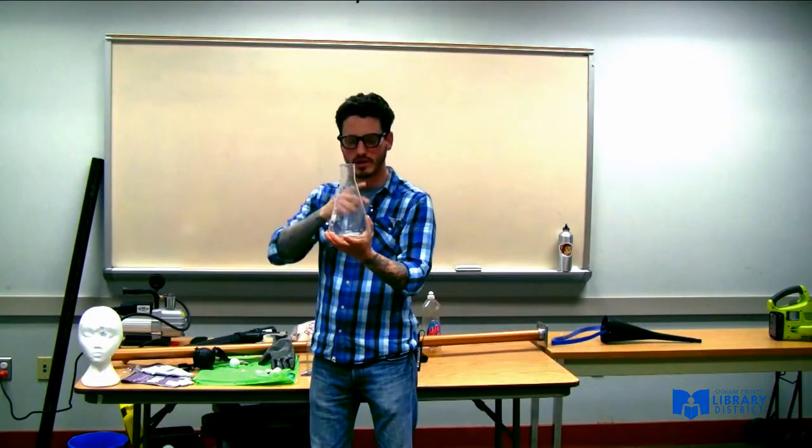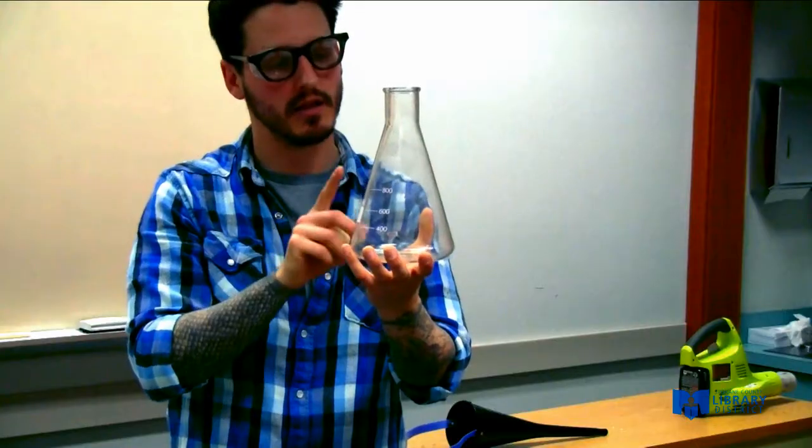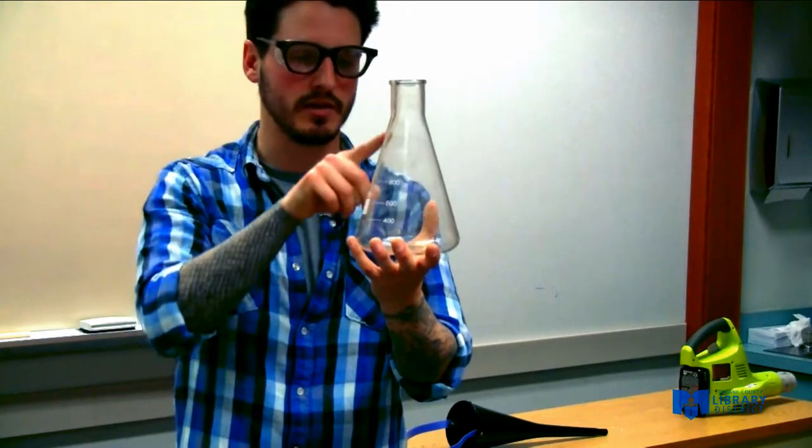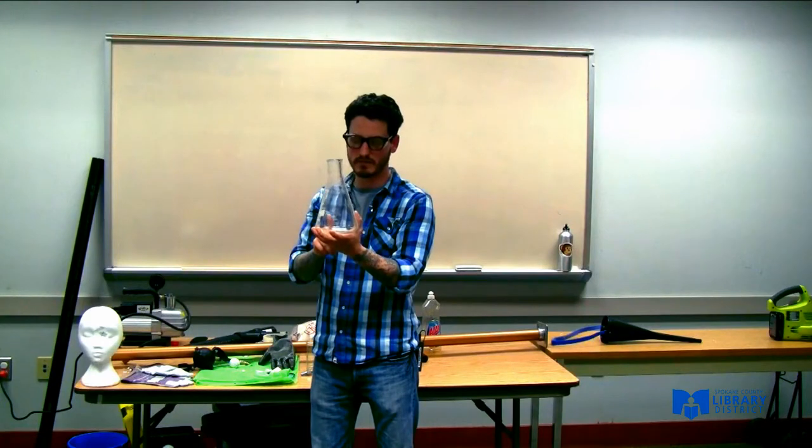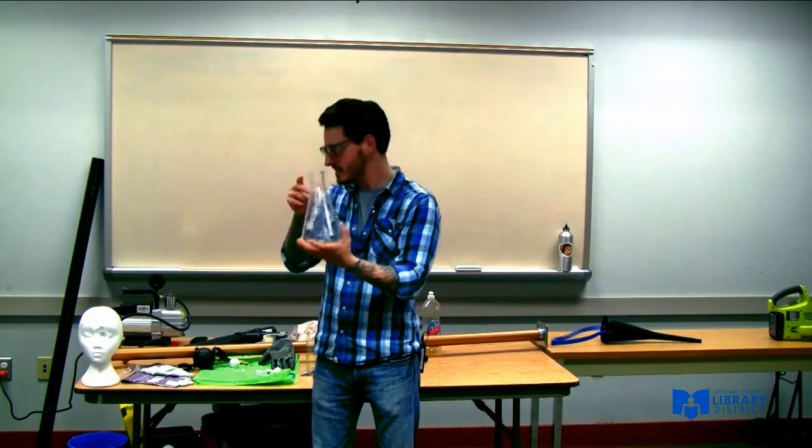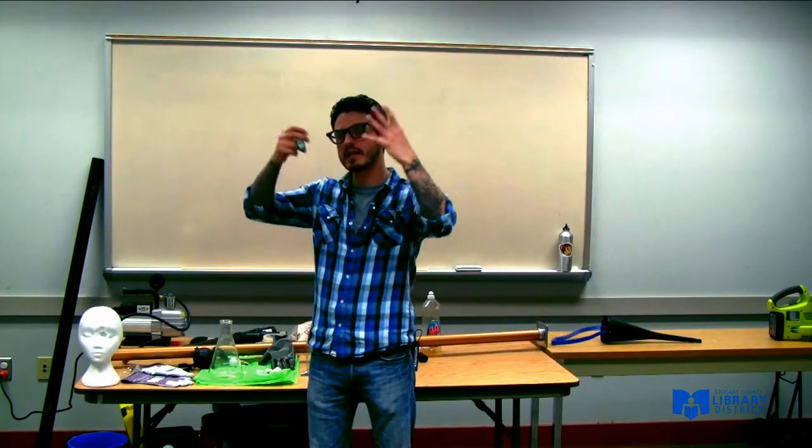Now to create an imbalance, we either need to increase the air pressure around us or decrease the pressure inside the bottle. Now, a lot easier to decrease the pressure inside the bottle. Easiest way for me to do this is with fire. See, fire has this effect on air. When you heat up air, it expands.